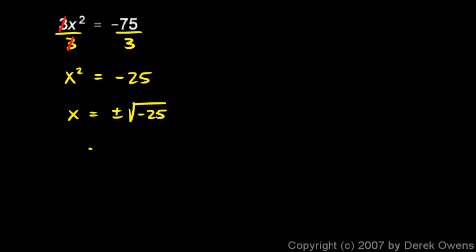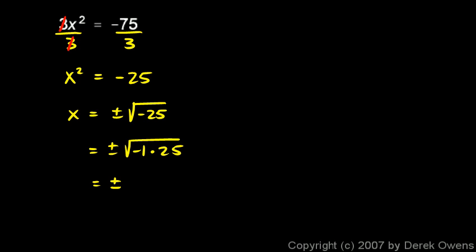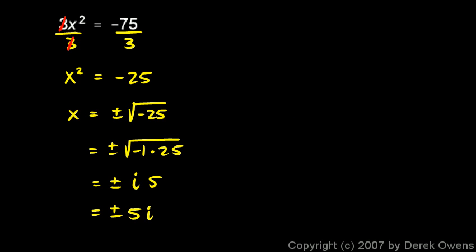I think of that as plus or minus negative 1 times 25. I recognize that the square root of negative 1 is i and the square root of 25 is 5. So this is going to be plus or minus i times 5, and we typically write the i at the end: plus or minus 5i. You can think of the i as a variable — like 3x rather than x times 3. Note we have two answers since this is a quadratic: positive 5i and negative 5i.